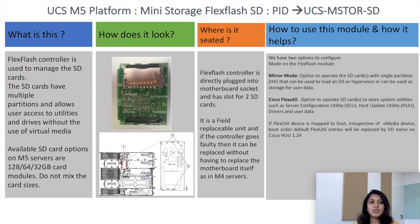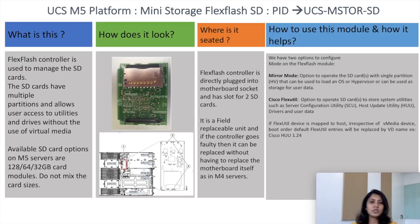Available SD card options on M5 servers are 128, 64, and 32 GB. The FlexFlash controller is directly plugged into the motherboard socket and has a slot for two SD cards. It is a field replaceable unit, and if the controller goes faulty, we can replace the controller directly without having to replace the motherboard itself.